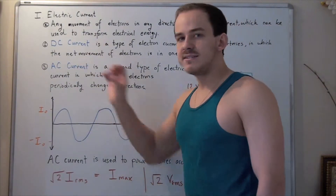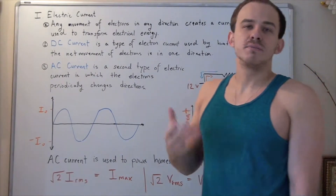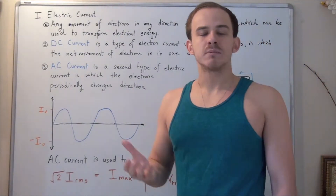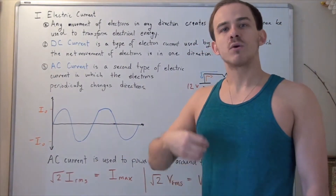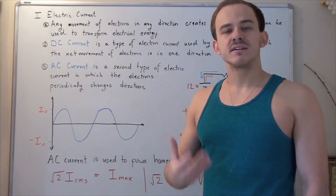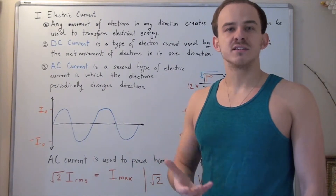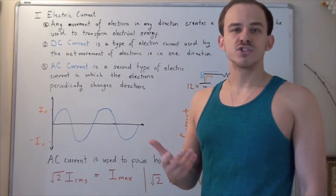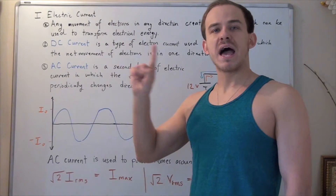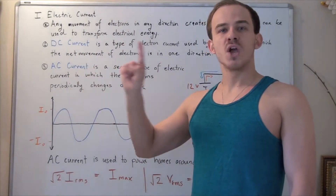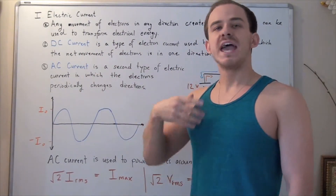Now let's look at AC currents. AC currents are simply a second type of electric current in which our electrons periodically change direction — they constantly change direction. In other words, they oscillate back and forth over a very small amount of space.